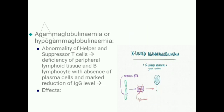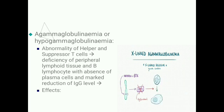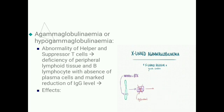Agammaglobulinemia or hypogammaglobulinemia involves abnormality of helper and suppressor T cells, resulting in deficiency of B lymphocytes and deficiency of peripheral lymphoid tissue. Because of this, there is absence of plasma cells and marked reduction of IgG levels.